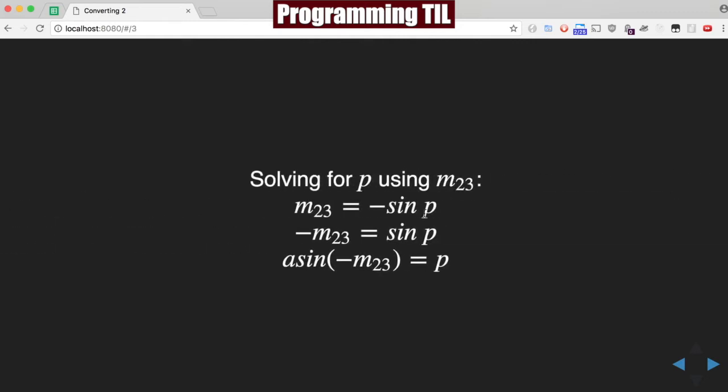We can solve for P first because it's the easiest. You can see M23 is negative sine P, and arcsin of negative M23 is equal to P.